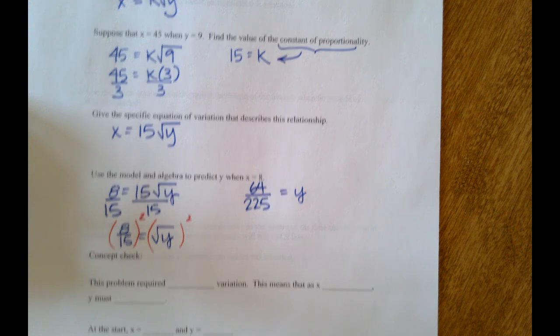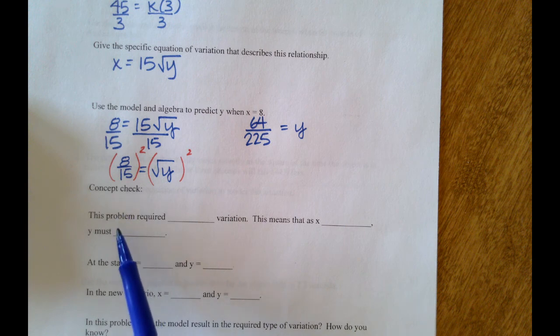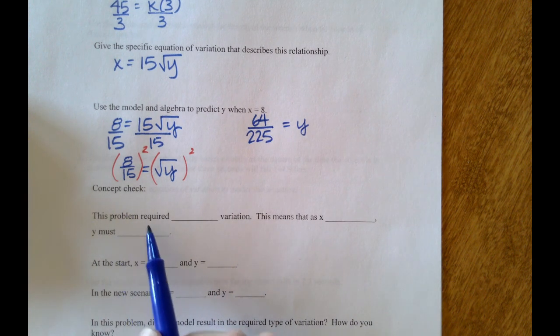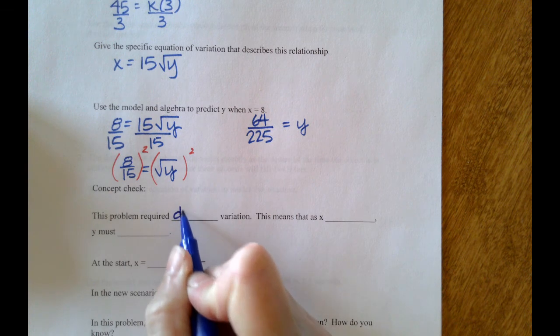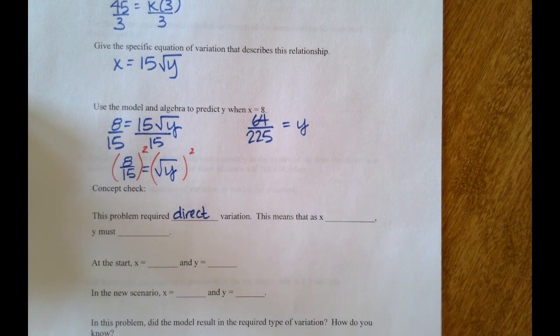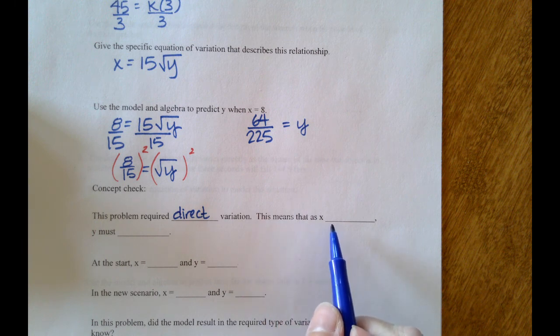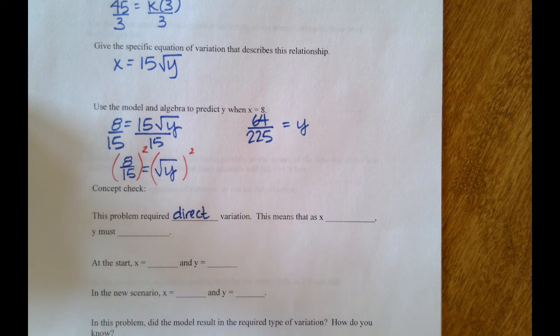As a concept check, we back things up and we look to see if things went in the correct direction. This problem required direct variation; it was given to us in the problem. And that means that as x increases, y must also increase. In our case, x decreased; it started at 45.